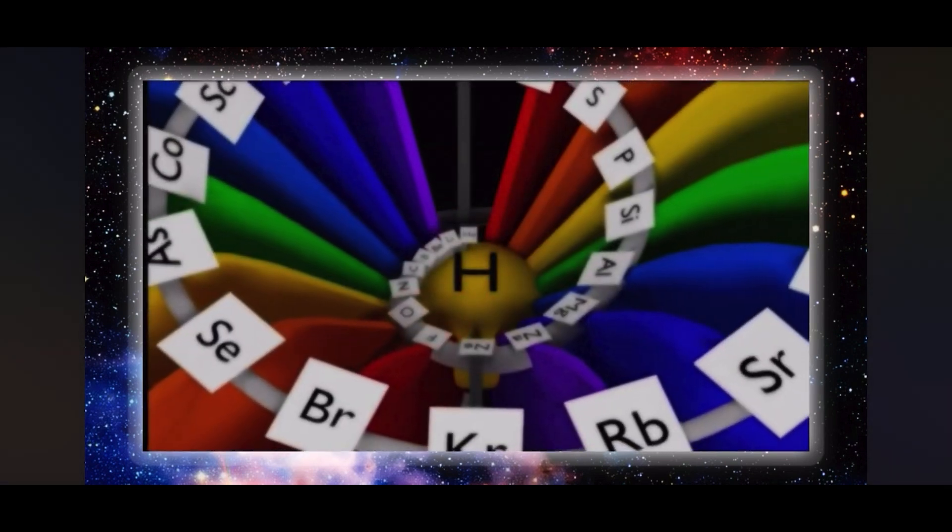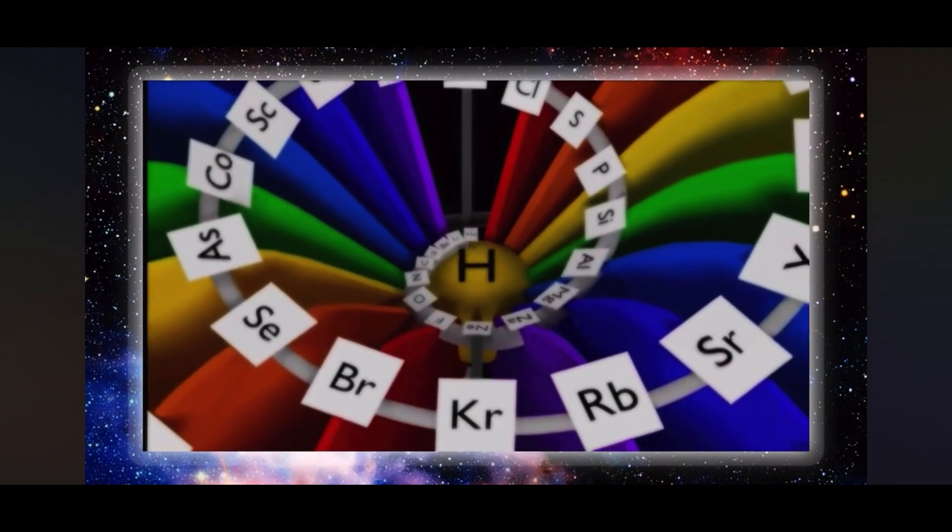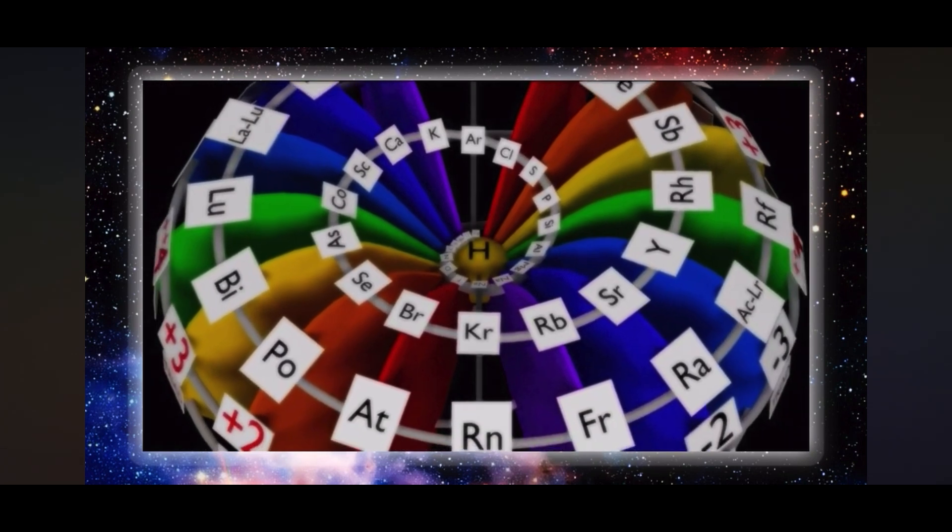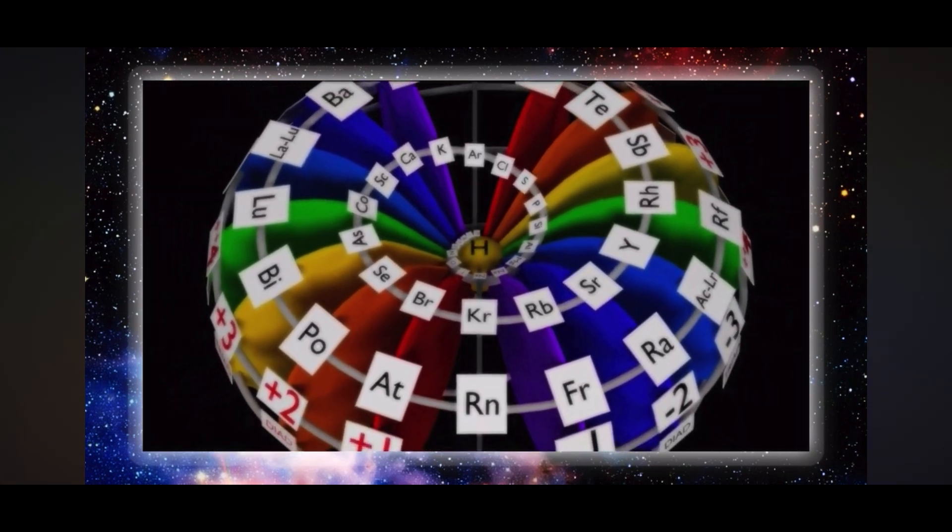The disposition of the sorted elements once correctly placed across the torus model, according to their octave progression, take on their unique planes of reference. The noble gases, which are classified as inert, occur on the same plane.